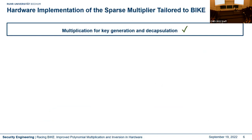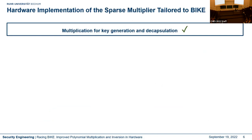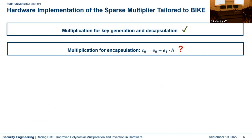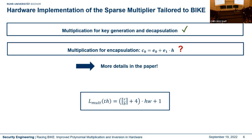Using this module we can easily perform multiplication for the key generation and decapsulation. However, for the encapsulation computing c0 = e0 + e1*h, the weight of e1 is not individually fixed — only the total weight of e0 plus e1 is fixed. Therefore, using the module as presented would not be constant time. With some modifications, we managed to implement a constant-time multiplier that always finishes in (r/b + 4) * Hamming_weight(sparse polynomial) clock cycles.